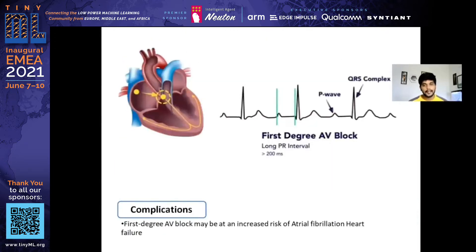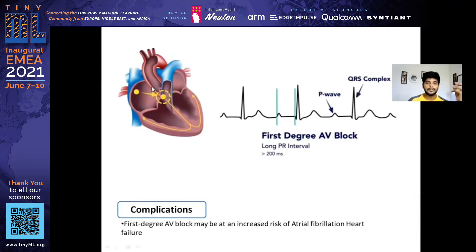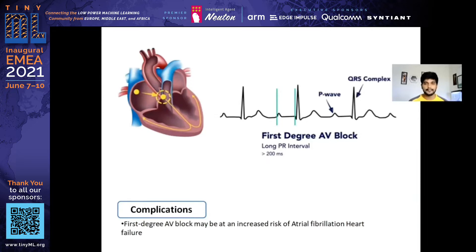For first degree heart block, the interval between the P wave and the QRS complex will be greater than 200 milliseconds. This can also cause atrial fibrillation cases. That is the basic terminology I wanted to clarify before presenting the technical aspects.